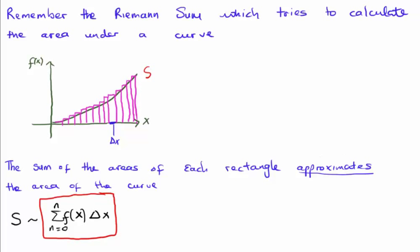So we could say, for example, that the area under the curve, I'm going to call it S, is approximately the sum from n equals 0 to n of f of x times delta x. This is what's known as the Riemann sum.